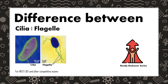Flagella are made up of the protein flagellin. They help in locomotion in prokaryotic and eukaryotic cells. Flagella are of three types: bacterial flagella, which are found in E. coli; eukaryotic flagella, which are found in sperm cells; and archaeal flagella, which are similar to bacterial flagella but devoid of a central channel.